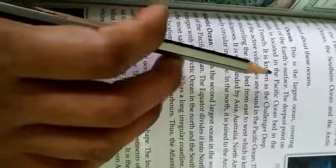Let us read about these oceans. First one is Pacific Ocean. This is the largest ocean covering one-third of the Earth's surface.